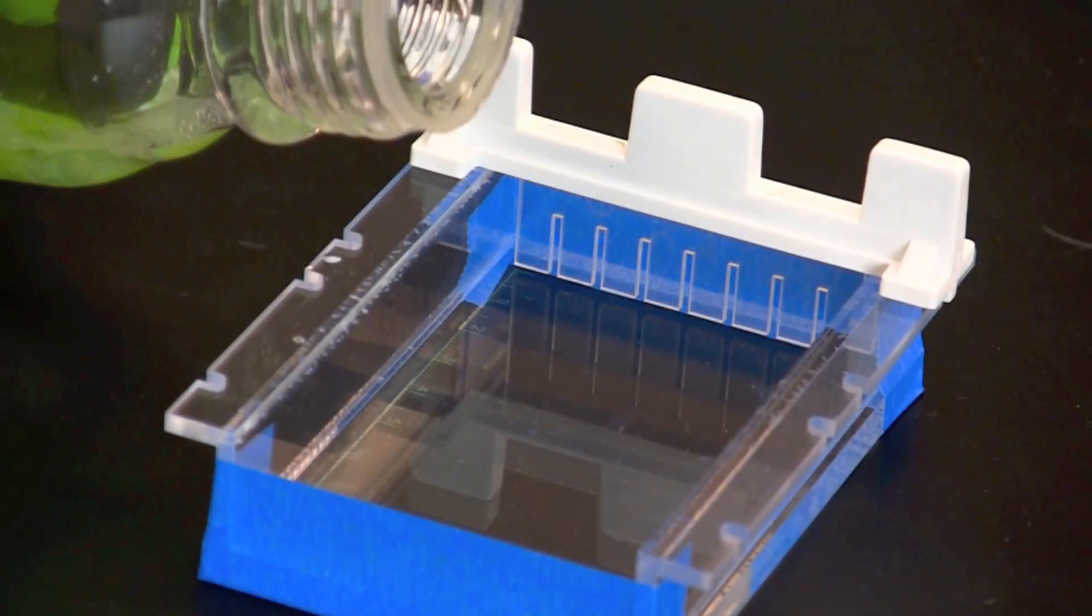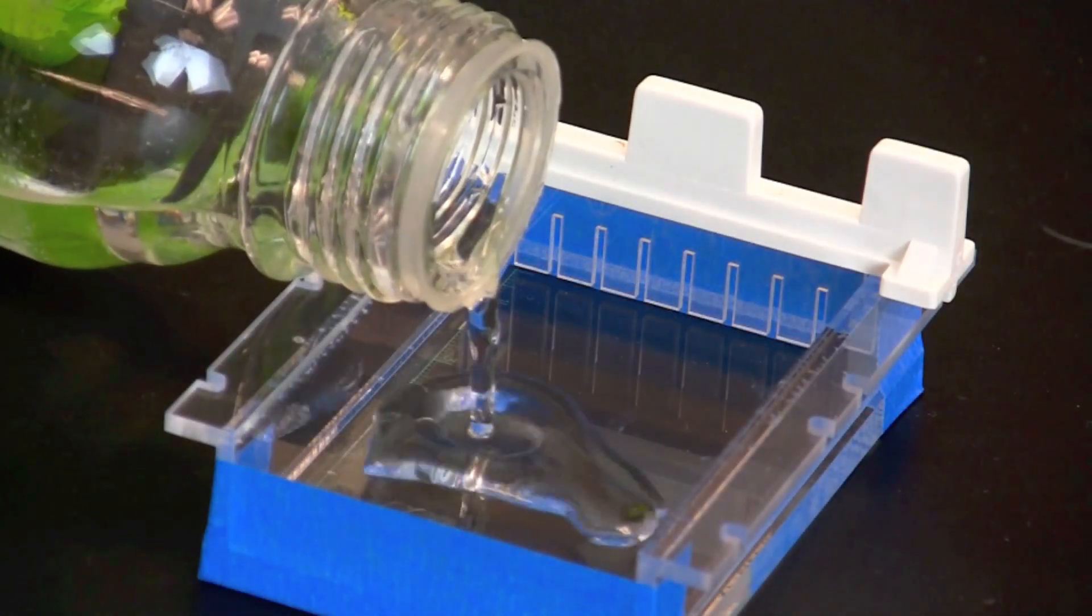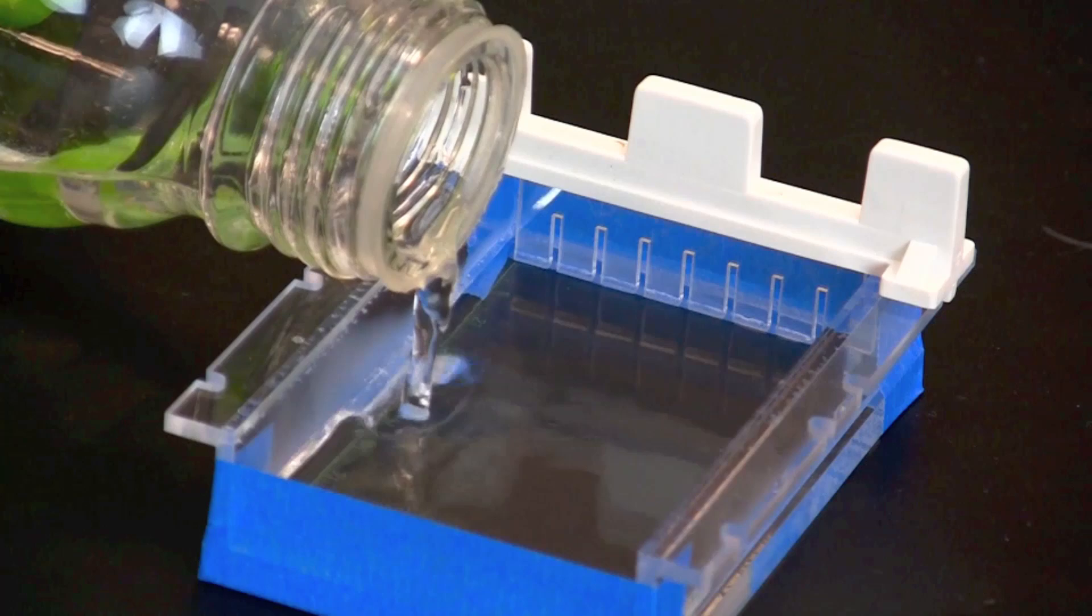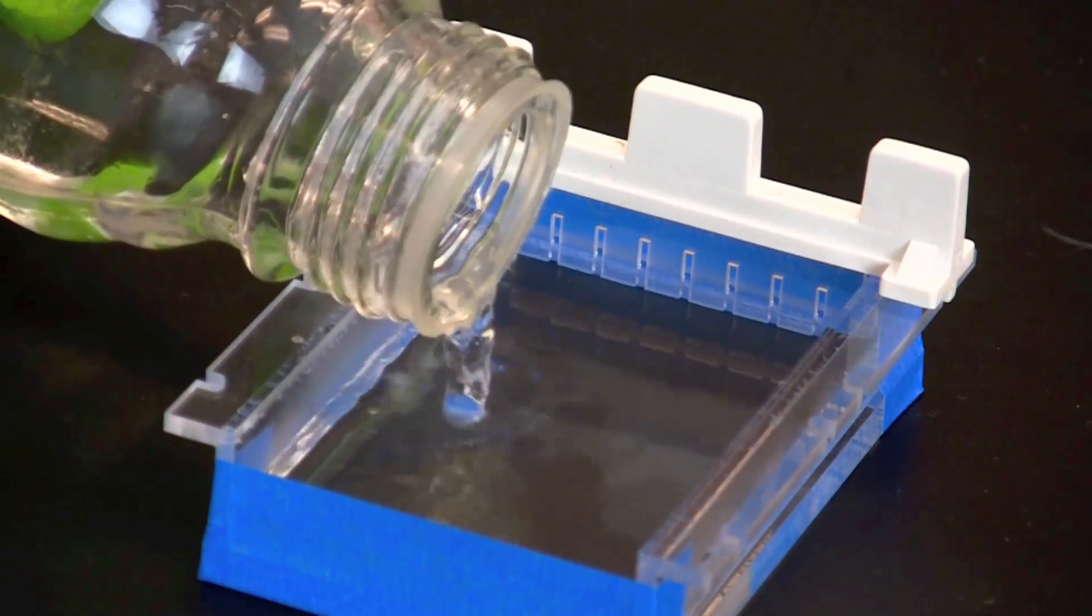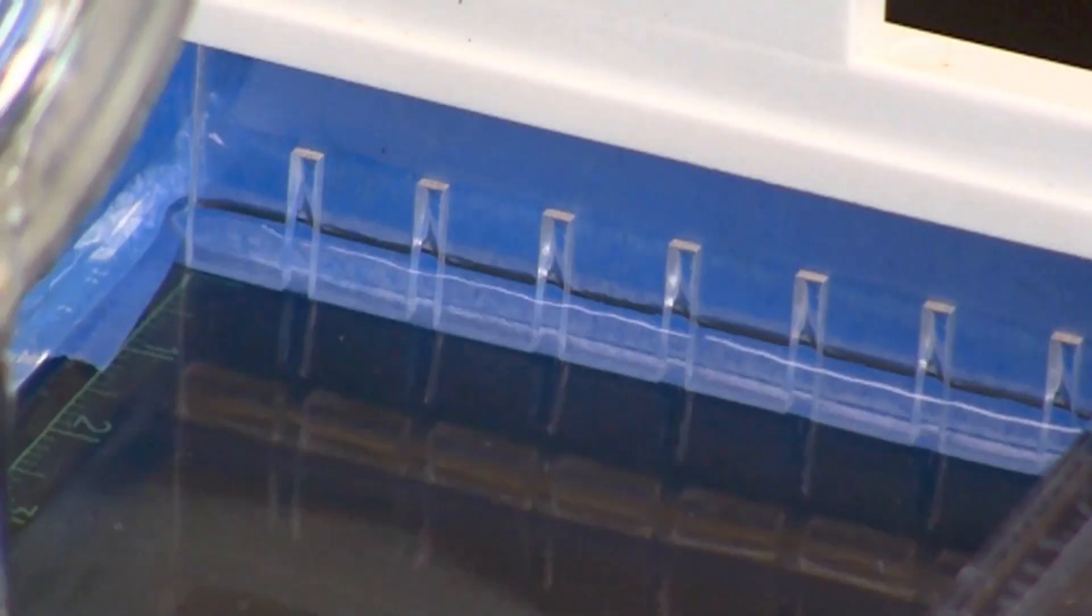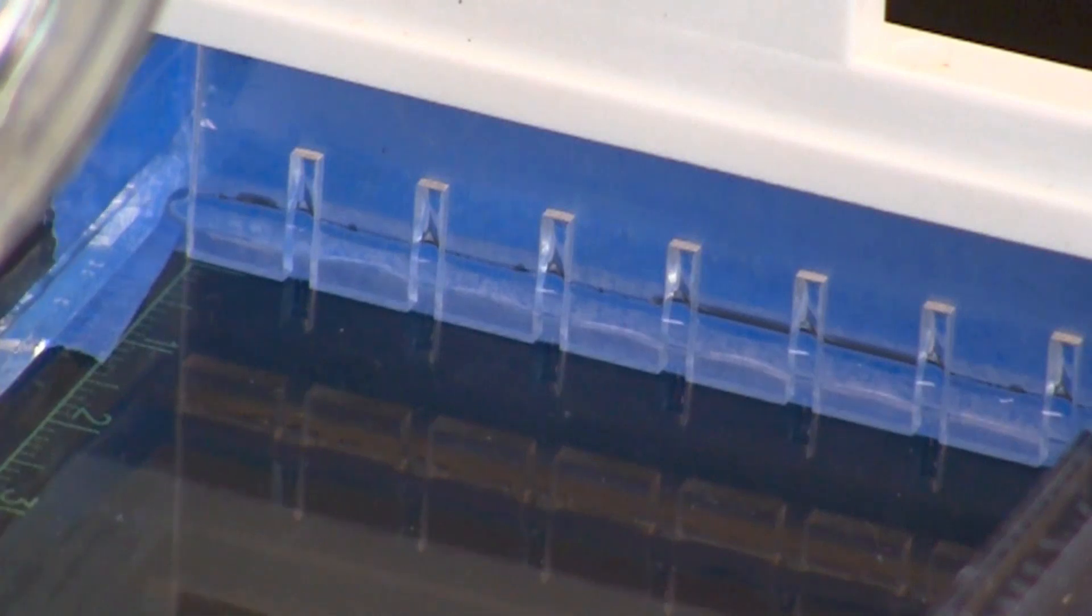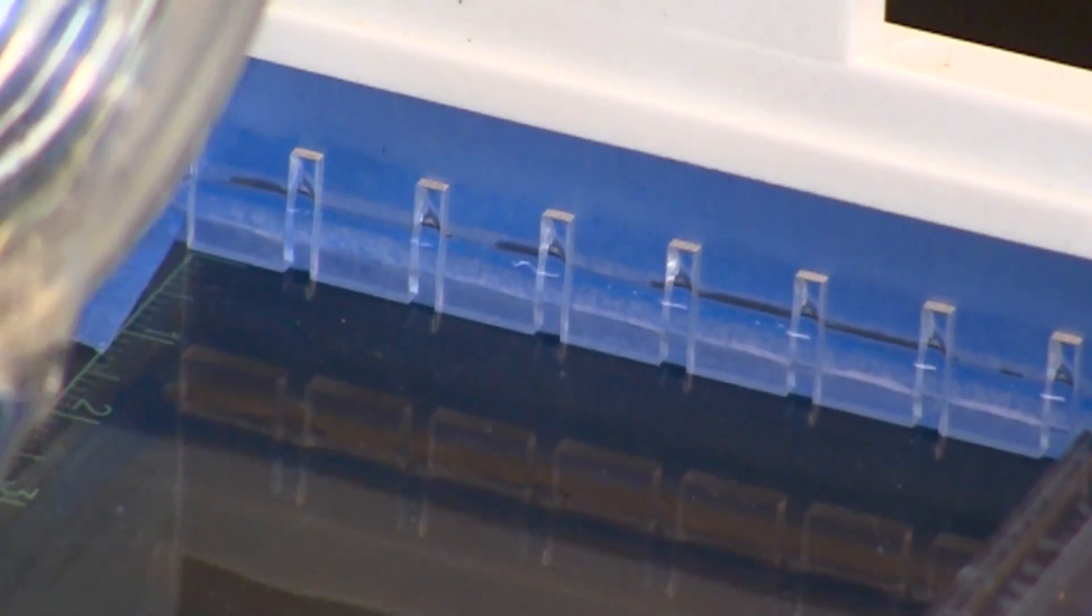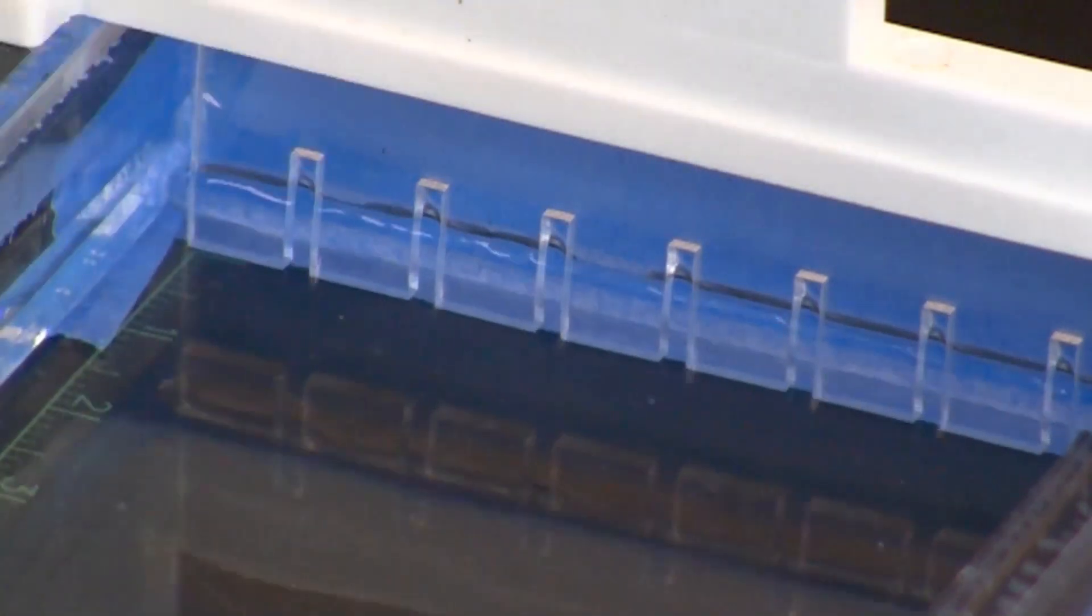Before pouring the molten agarose, make certain that it has cooled to 55 degrees Celsius. Pour the agarose into the gel tray until the agarose comes to within 2-4 millimeters of the top of the teeth of the comb.